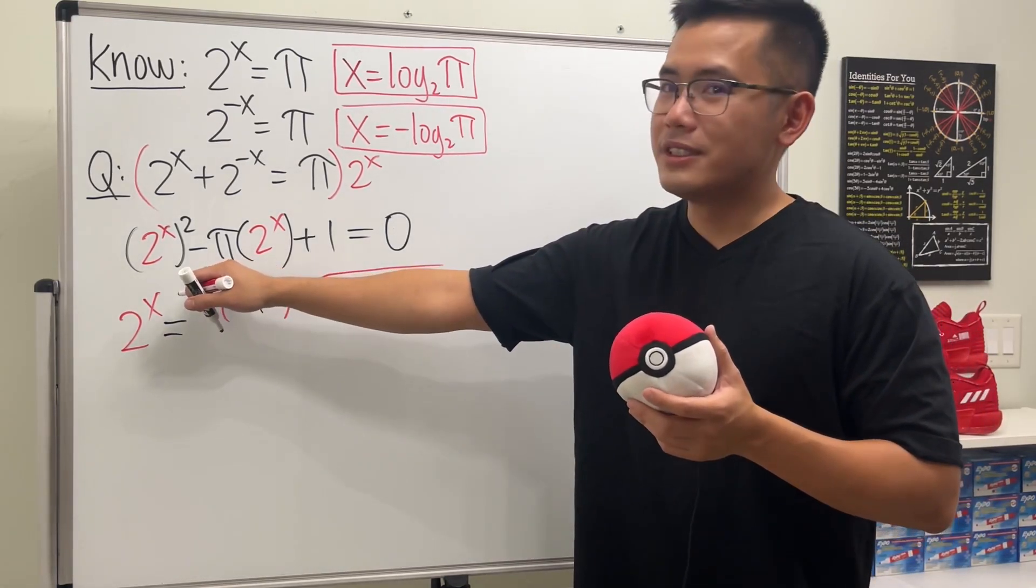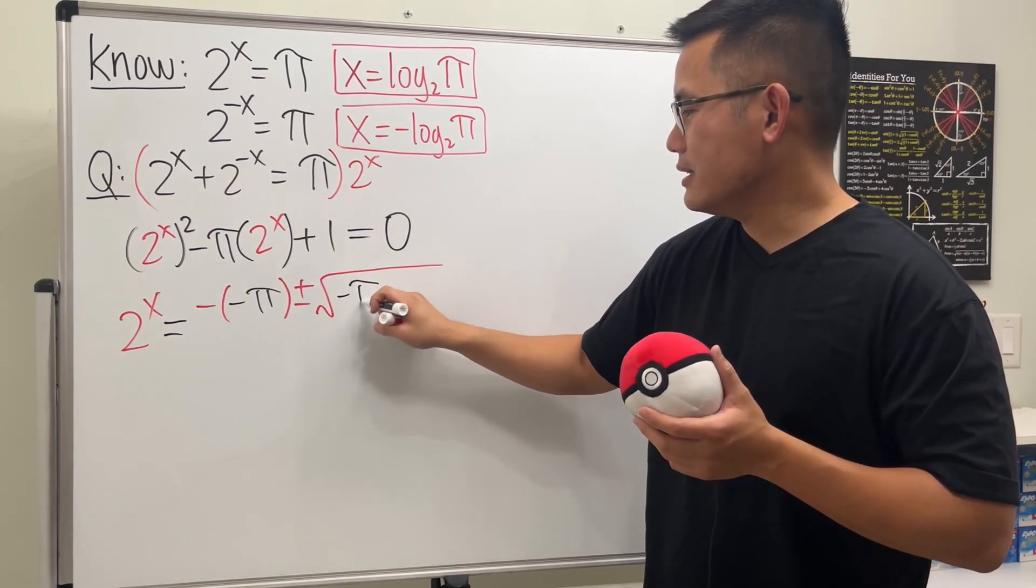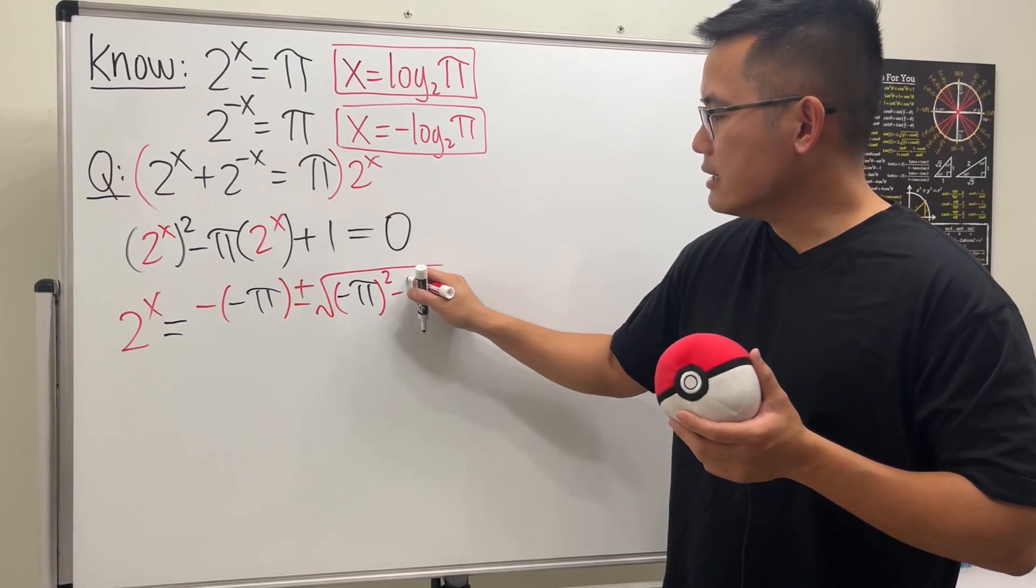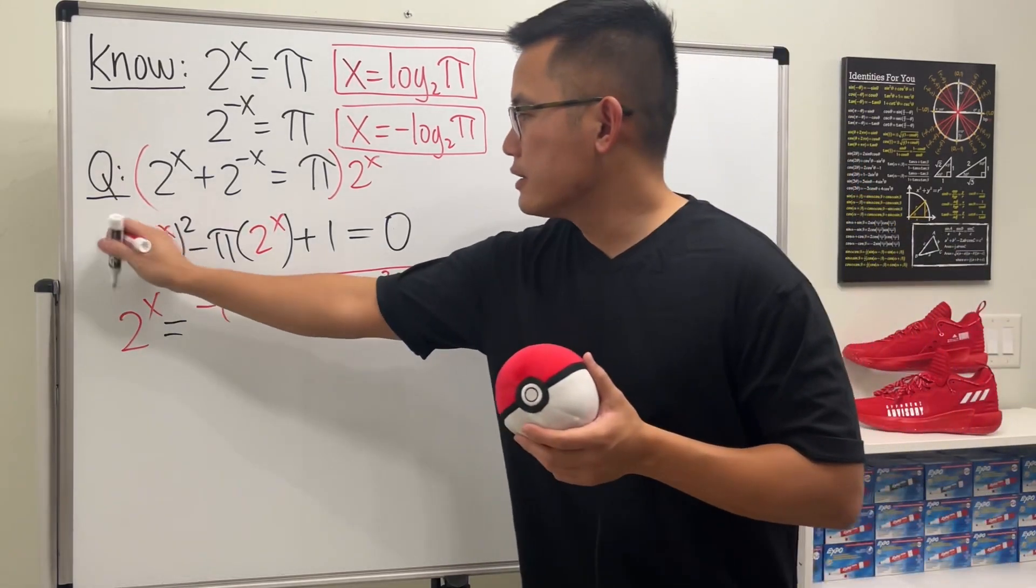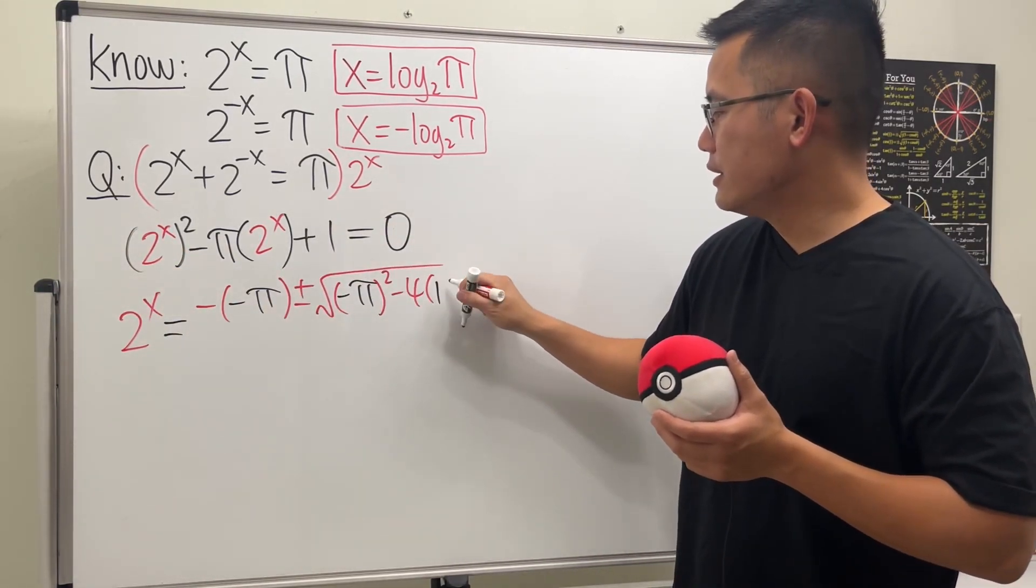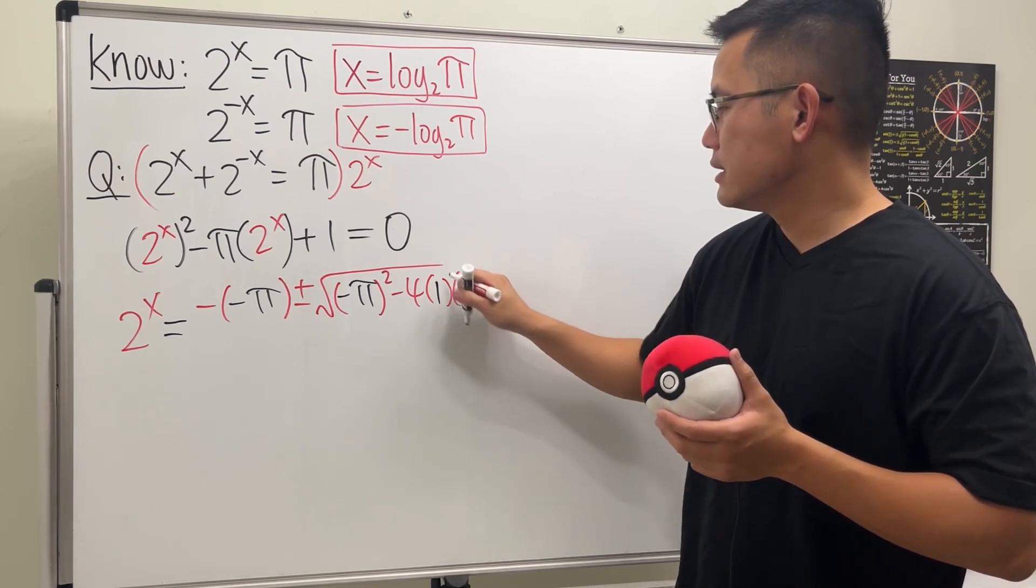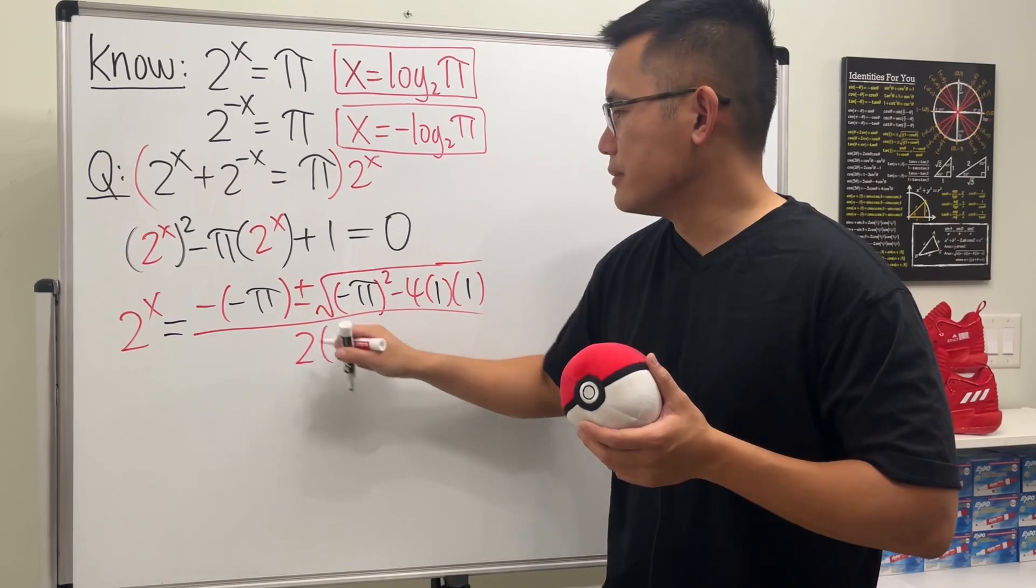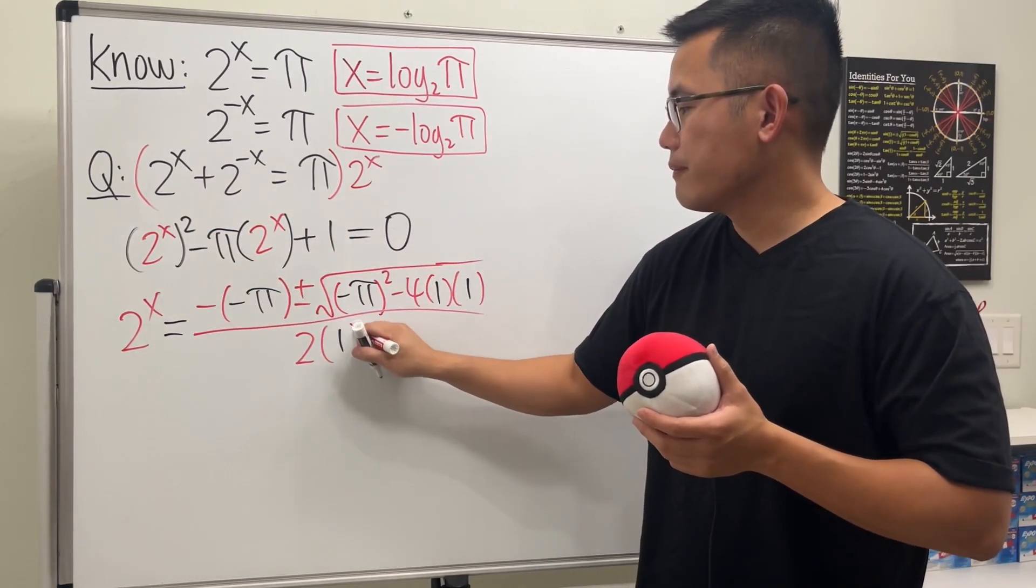This is negative pi, so let me just put this down like this. Negative pi, square for the b squared, minus 4ac. a is 1 and c is 1, so we have this term, and then all over 2 times a, a is, again, 1. All right, so that will be how the answer looks like.